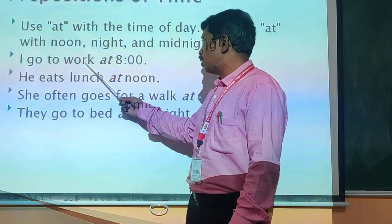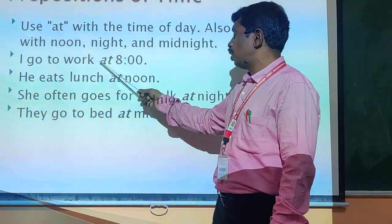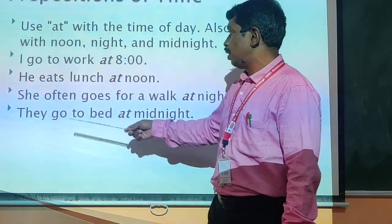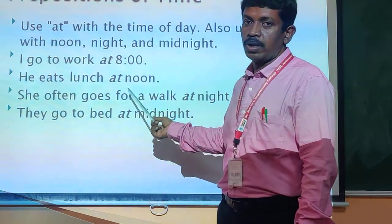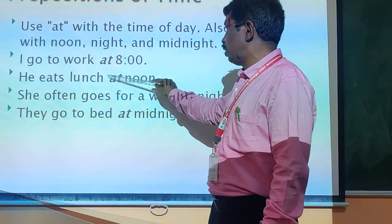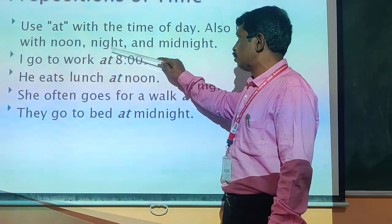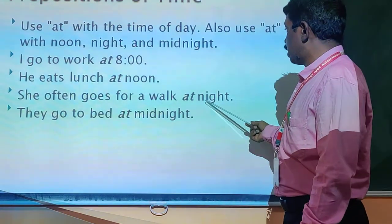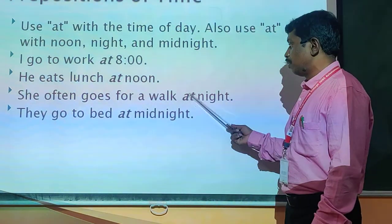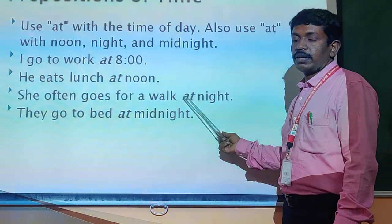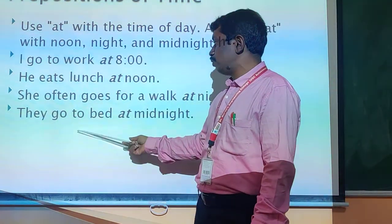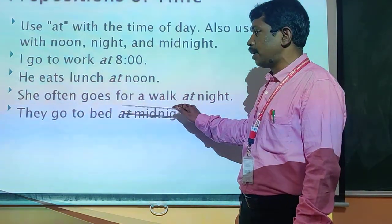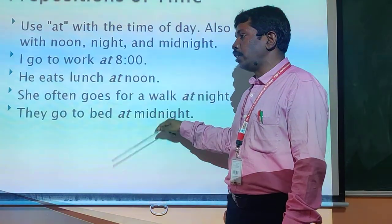I go to work at 8 o'clock — 'at' is showing the time of work. He eats lunch at noon. I go to work at night — this is also showing time. They go to bed at midnight — this is also showing time. So all these are prepositions of time. All these are important — we use them for time, seasons, and related expressions.